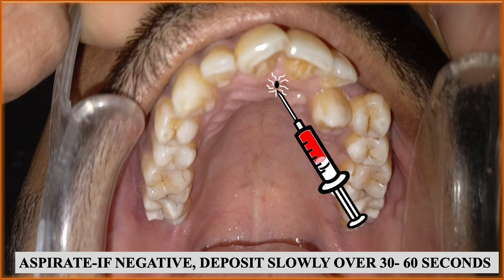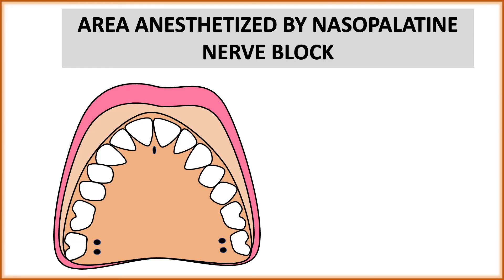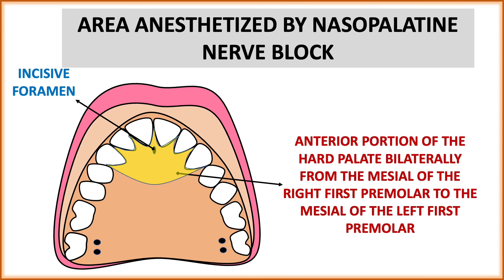The area anesthetized by the nasopalatine nerve block is the anterior portion of the hard palate bilaterally, from the mesial of the right first premolar to the mesial of the left first premolar — meaning the palatal hard tissue from canine to canine is anesthetized, as shaded in yellow in the figure.